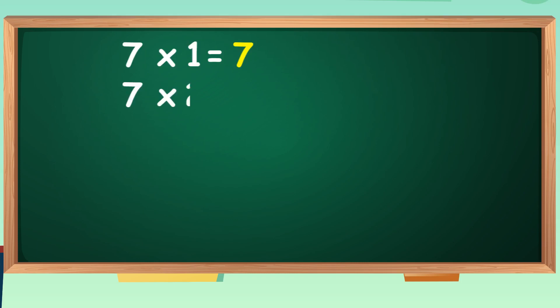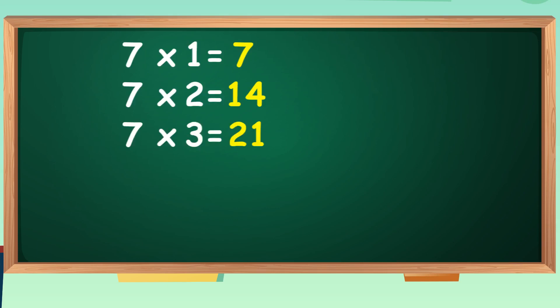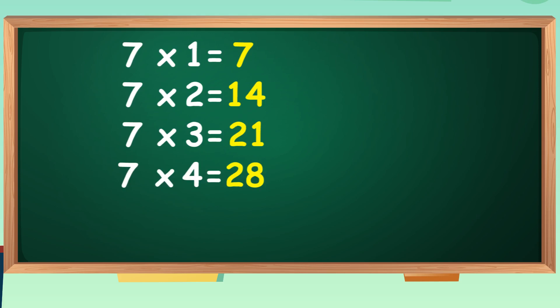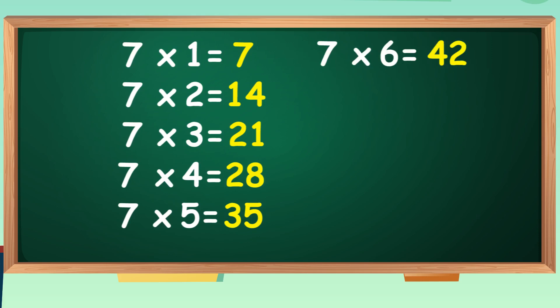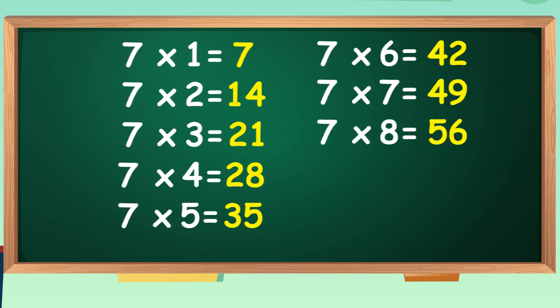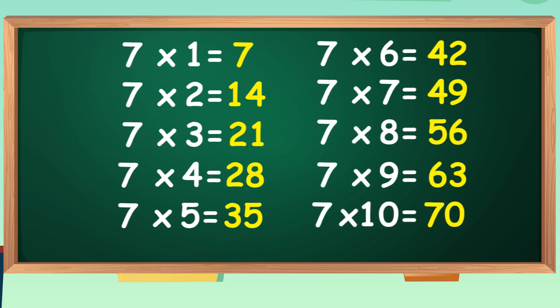Seven ones are seven. Seven ones are seven. Seven twos are fourteen. Seven twos are fourteen. Seven threes are twenty-one. Seven threes are twenty-one. Seven fours are twenty-eight. Seven fours are twenty-eight. Seven fives are thirty-five. Seven fives are thirty-five. Seven sixes are forty-two. Seven sixes are forty-two. Seven sevens are forty-nine. Seven eights are fifty-six. Seven eights are fifty-six. Seven nines are sixty-three. Seven nines are sixty-three. Seven tens are seventy. Seven tens are seventy.